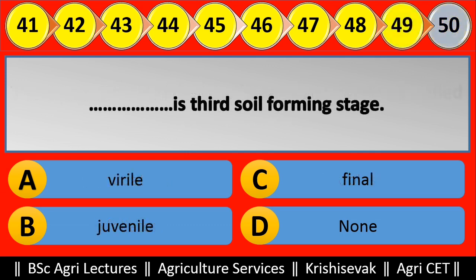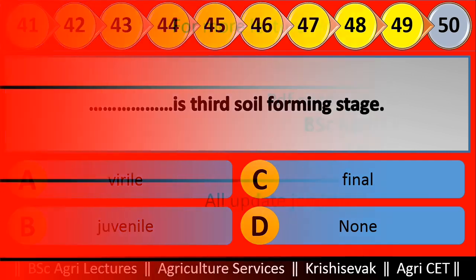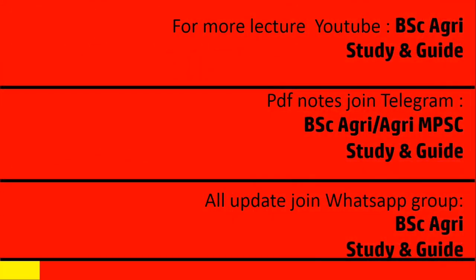Question 50: Blank is the third soil forming stage. Options are: (a) Virile, (b) Juvenile, (c) Final, (d) None. Right answer is Virile, option A.